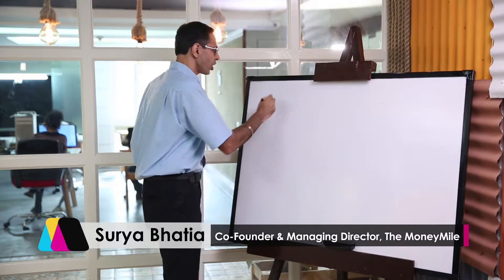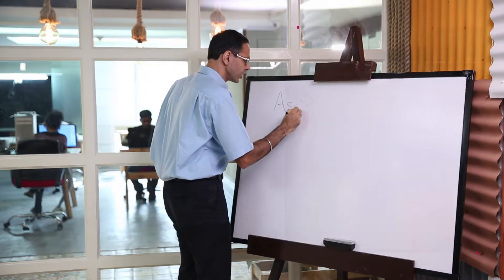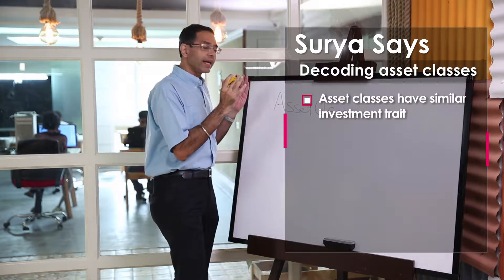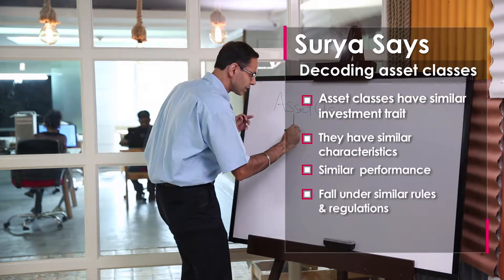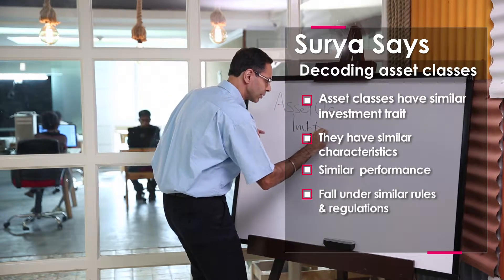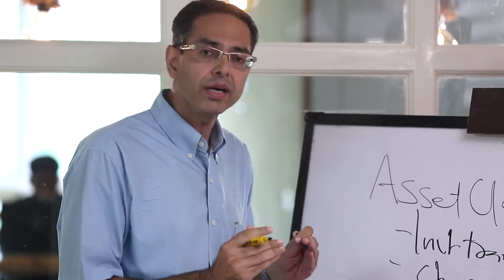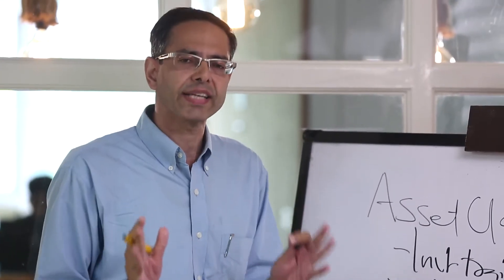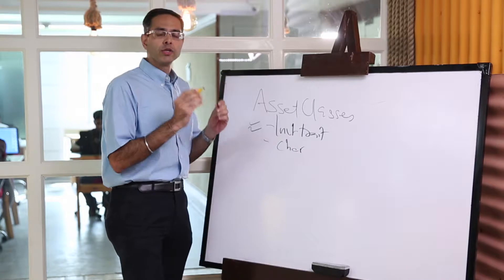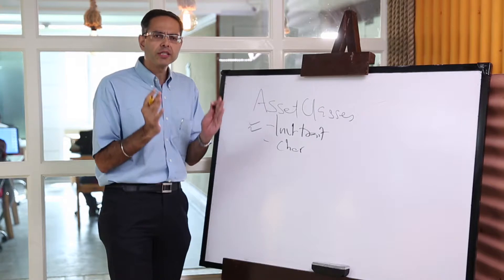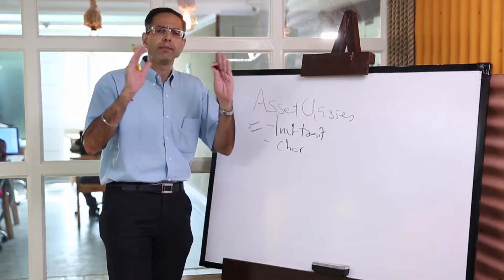So what are asset classes? Asset classes are different kinds of investments exhibiting a similar investment rate. Besides the investment rate, the characteristics are similar, they have similar performances broadly. At the same time, the taxation, the rules and regulations formulating that are also of a similar nature. So when you put money into one asset class, you can briefly and safely assume the returns being generated in that asset class would be in a similar order.